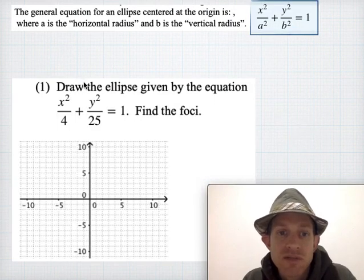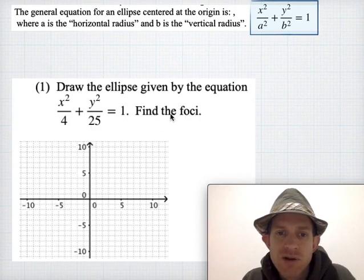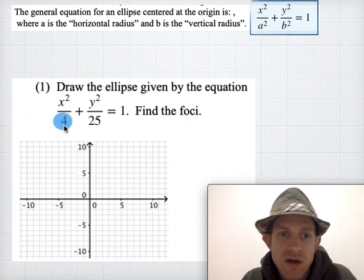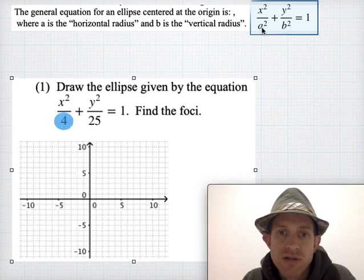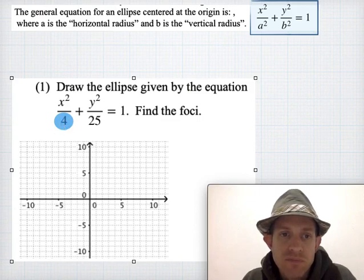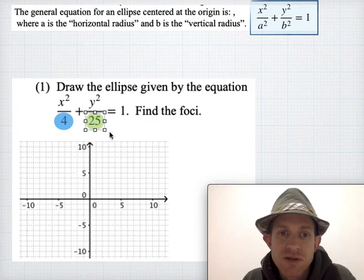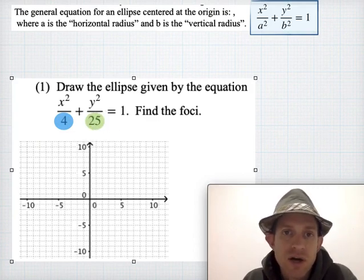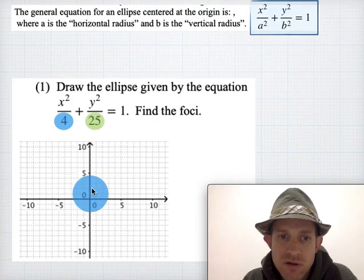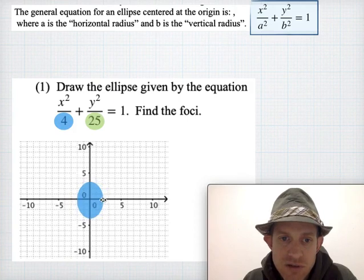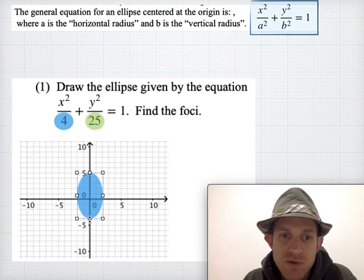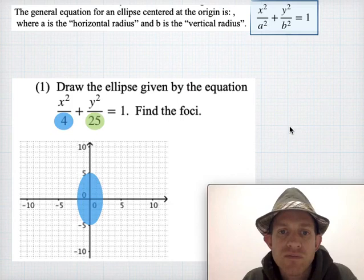Here's an example. How do we draw an ellipse given by this equation: x squared over 4 plus y squared over 25 equals one? And where are the foci? The x squared is divided by 4, so 4 is in the spot where our horizontal radius squared is, meaning our horizontal radius is 2. The vertical radius is going to be 5, because 5 squared is 25. So to draw this, we center it at zero zero, go out to 2 horizontally and up and down to 5 vertically — and there would be the ellipse.